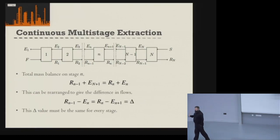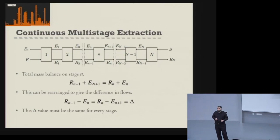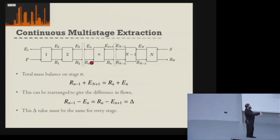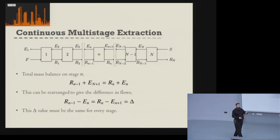As well as having this total mass balance over the system, we also need to think about a mass balance at each particular stage. If we take stage N as our general stage, we have R(N−1) and E(N+1) entering stage N, and R(N) and E(N) as the two products which leave that stage — the raffinate from the stage below, the extract from the stage above going in, and then the equilibrium products coming out.